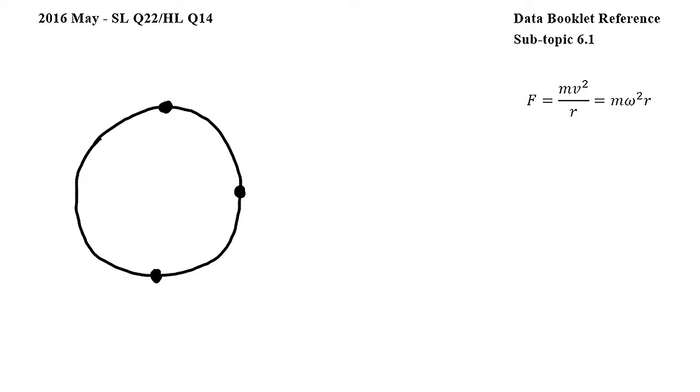In this question, a mass is attached to a rod and moves in a vertical circle at a constant speed, and we have to decide what is true about the force exerted by the rod on the mass.